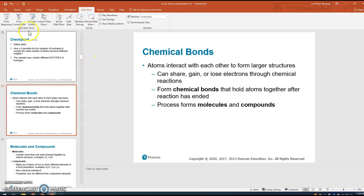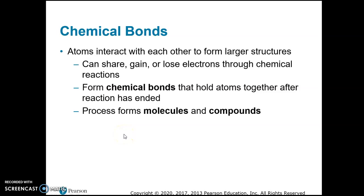Now we're going to move on and talk about chemical bonding. The reason that chemicals form bonds is so that the atoms can fill their outer electron shells or outer energy levels. What they can do to fill those outer energy levels is either share electrons with other atoms, gain electrons from other atoms, or lose electrons. Chemical bonds are strong connections that hold atoms together, and chemical bonding forms molecules and compounds.